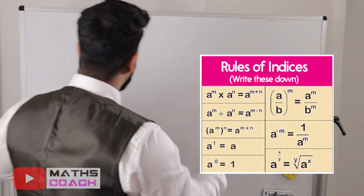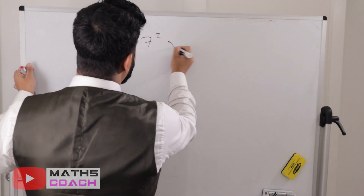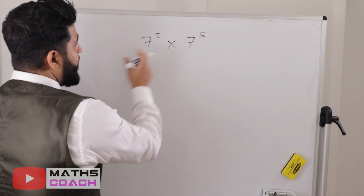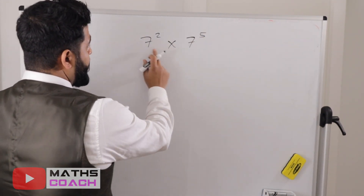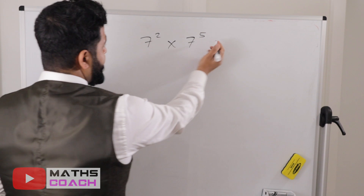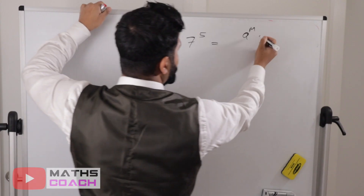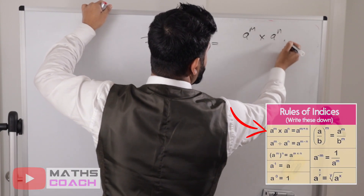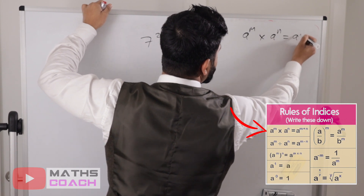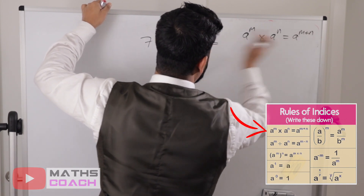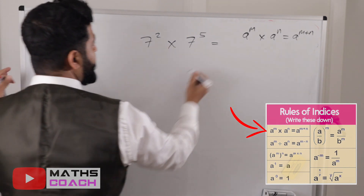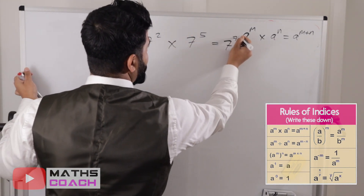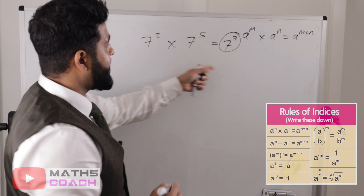So if we have 7 squared and we want to multiply by 7 to the power of 5, both bases are the same so we can apply our rule: a to the power of m times a to the power of n — we simply do m plus n, adding the two powers. That gives 2 plus 5, which is 7, so the answer is 7 to the power of 7.